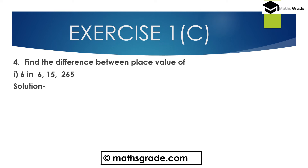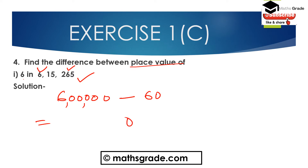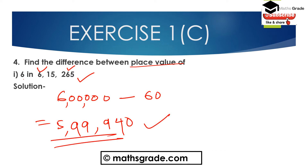Now question number 4: find the difference between the place values of 6 in 6,15,265. The place value of the first 6 is 6 lakhs, and the place value of the second 6 is 60. So 6,00,000 minus 60 equals 5,99,940. Therefore, the difference between the place values of 6 in 6,15,265 is 5,99,940.